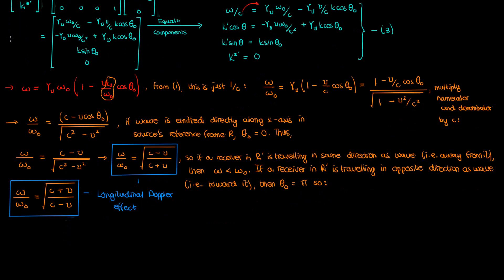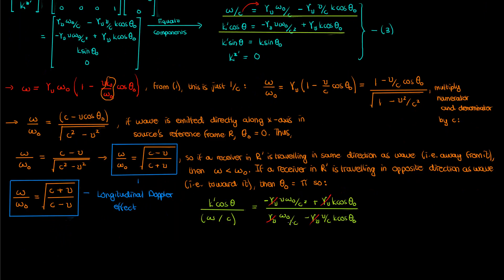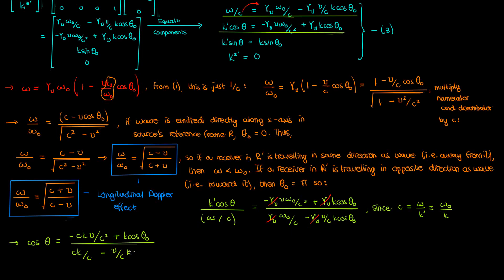Going back to equations 3, if we take the ratio of the second equation to the first, and use the fact that both omega over k and omega-naught over k-naught equal the speed of light, the left-hand side becomes cosine theta. Since gamma is common to every term on the right-hand side we can cancel it, and substituting omega-naught equals c times k-naught and canceling the k-naughts and c's, we get an expression for cosine theta — the angle at which the receiver in R' perceives the wave traveling. This angle is not necessarily the same as theta-naught unless v equals zero. This effect, where the emission angle in the source's frame differs from the angle perceived in a relatively moving receiver's frame, is called aberration.